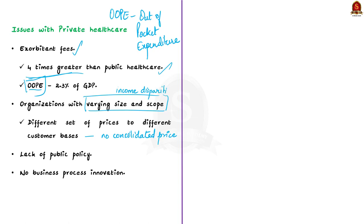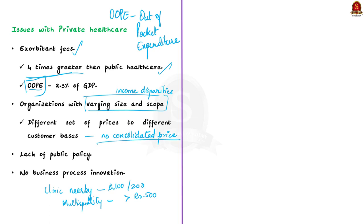For example, if you have an infection, you can visit a normal clinic nearby where consulting fees might be around 100–200 rupees, or visit a big multi-specialty hospital where it could be 500 or more. This variation makes it difficult for the government to fix a consolidated price. Another major issue is there is no public policy with respect to private healthcare — if there were a policy, it would guide the private system to provide good quality healthcare at low cost. The author also cites lack of business process innovation, since only a few philanthropic healthcare organizations focus on cost-reducing innovations.